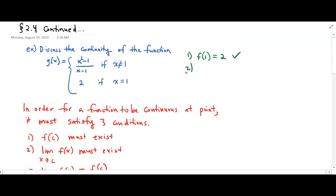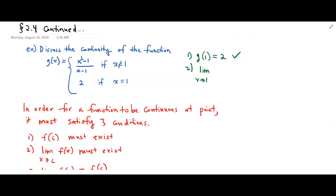Number two: does the limit exist? So the limit as x approaches 1 — does that exist? Our function is g, not f, so this should be g. The limit as x approaches 1 of our g function — we have to figure out what it equals. We're in condition two, and we need to figure out what the limit is.